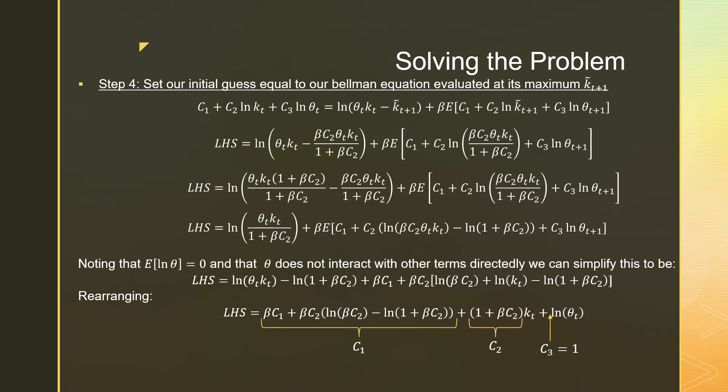This is because C2 is a term that's attached to KT in our initial guess. And our C3, which is the term that's attached to our ln theta T, that's just going to be 1, and that's just followed based on logic and looking at this directly.